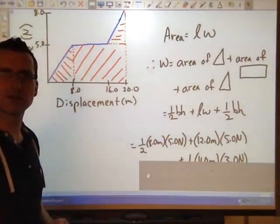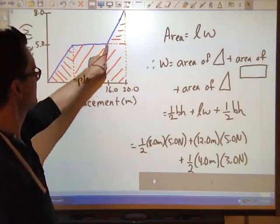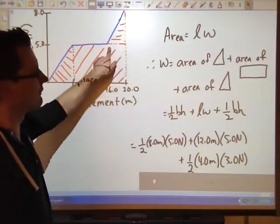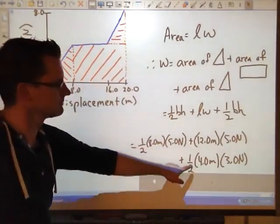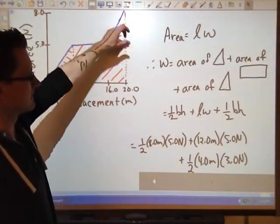Plus the next section here. So from 8 to 20, of course, 20 subtract 8. This section here is 12.0 meters. And this length here is 5.0 newtons. So 12 times 5. That's how I got that.